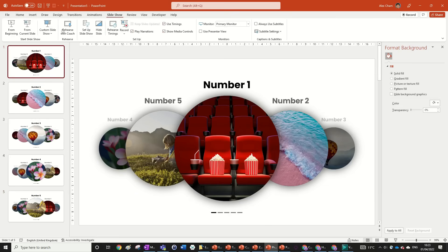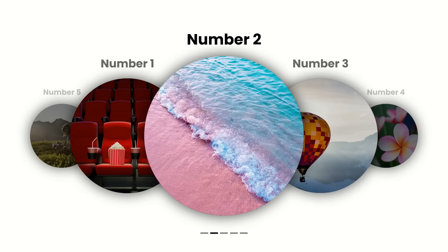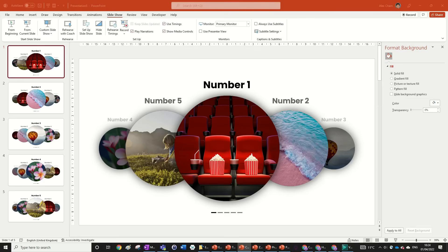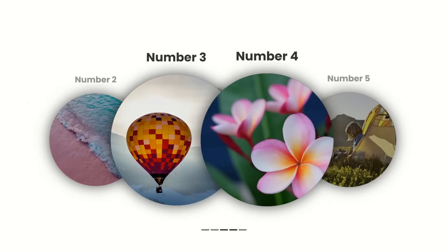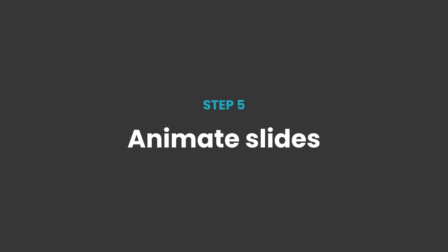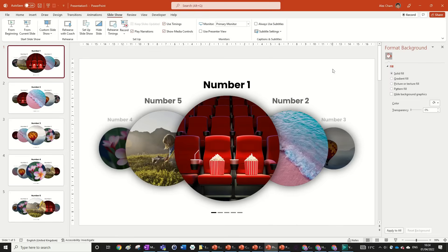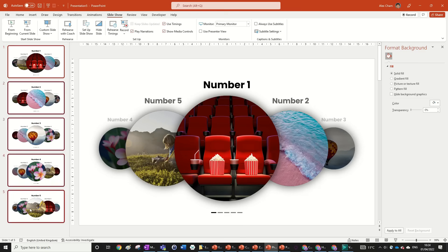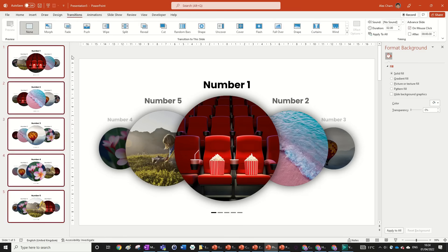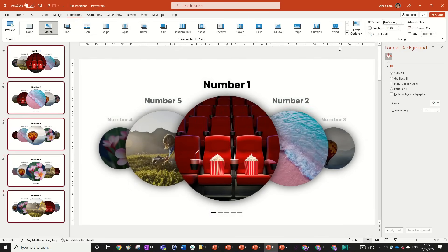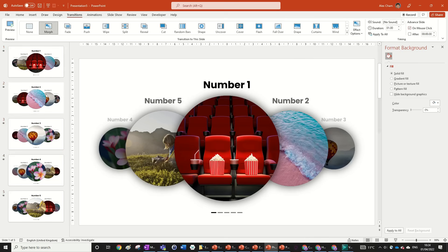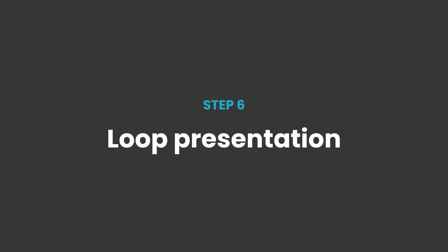Now for the animation: highlight all slides, go to Transitions, and select Morph. Set the duration to 1 second — you can go faster if you prefer. Our last step is to loop the presentation so you can go back and forth endlessly.